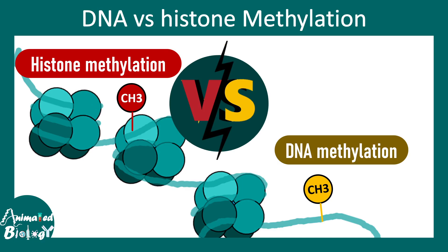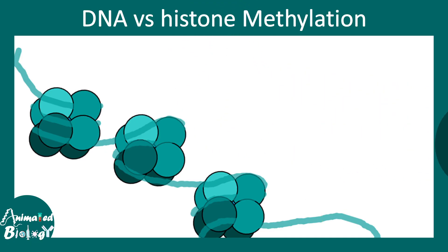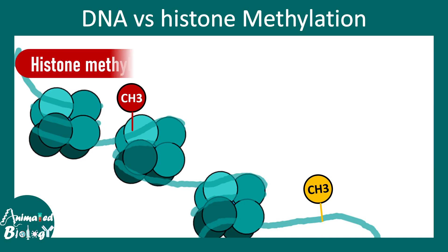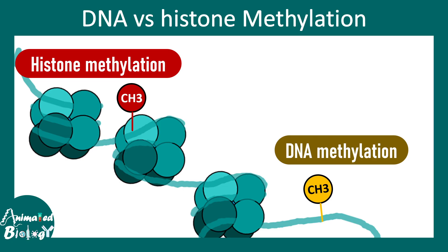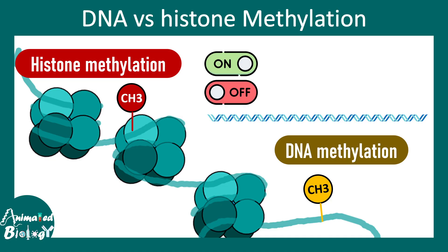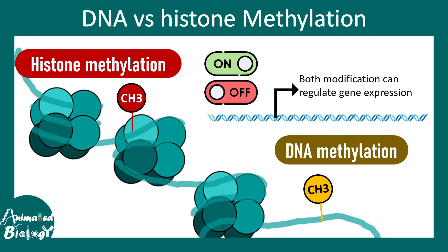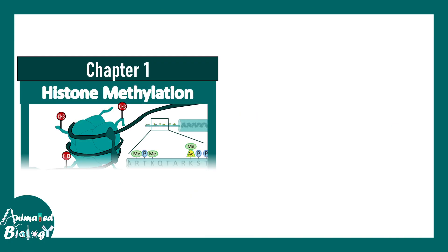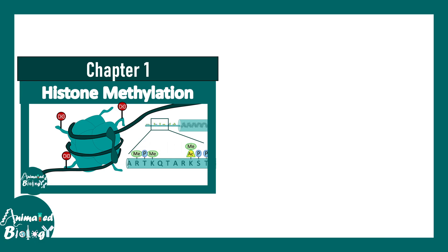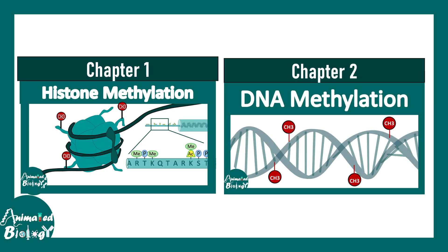In this video we'll talk about DNA versus histone methylation. Methylation is one kind of epigenetic mark that can be put on DNA or even histones. Both these kinds of modifications can have different effects on gene expression regulation. We'll first talk about DNA methylation and then we'll talk about histone methylation — these are the two important parts covered in this video.